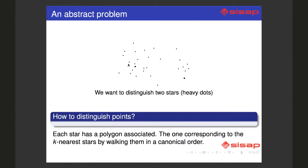How can we obtain the neighborhood? We will use - each star will have a polygon associated. The polygon will be obtained from the k-nearest neighbors of the star by walking them in a canonical order. There are several canonical orders we can use.